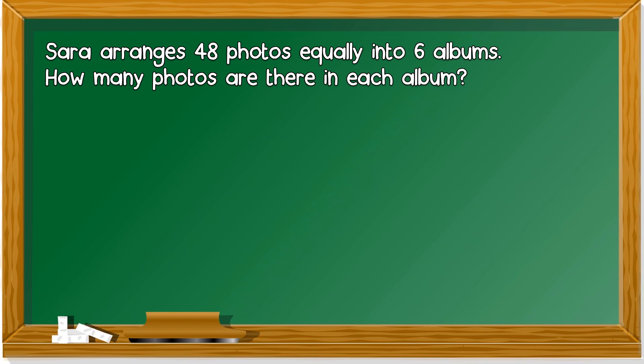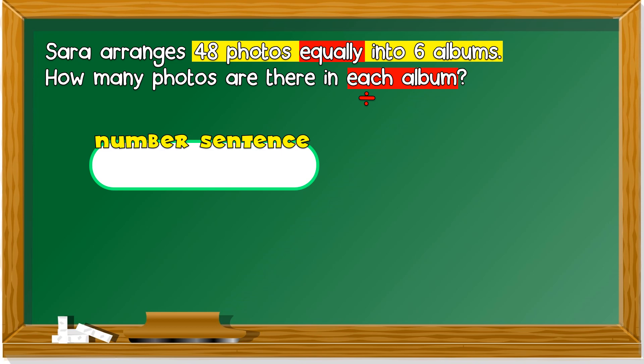Next, we take a look at this. Sarah arranges 48 photos equally into six albums. How many photos are there in each album? We look at the keywords first. 48 photos equally into six albums. Equally. Each album has how many photos? The operation here is divide, division.